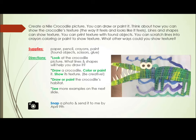Lines and shapes can show texture. You can print texture with found objects. You can scratch lines into crayon coloring or paint to show texture. What other ways could you show texture?